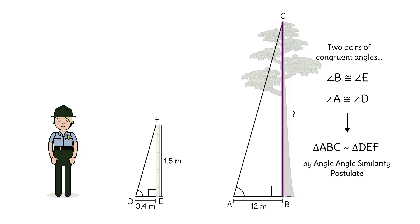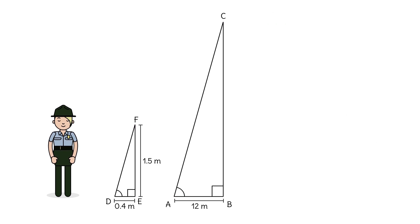So can we find the height of the tree? Yes. Similar triangles have proportional sides. That means the ratio of the vertical lengths is equal to the ratio of the horizontal lengths. Let's call the tree height H.